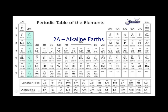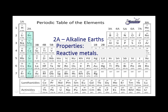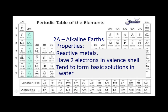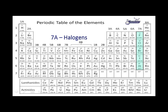Now let's look at the alkaline earths — the 2A family, beryllium all the way down the line. The properties of the alkaline earths: they are reactive metals, not quite as reactive as the alkali metals, but definitely reactive. They have 2 electrons in their valence shell, and they also tend to form basic solutions in water.